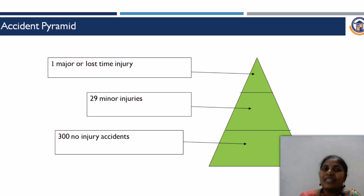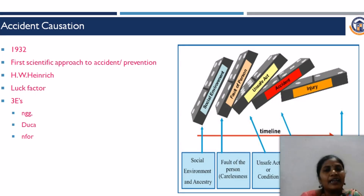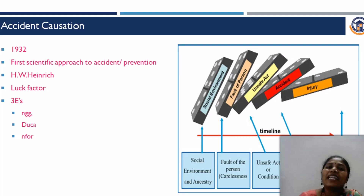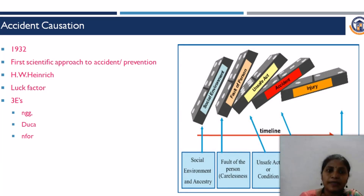Based on this accident pyramid research, they came up with accident causation theory proposed by H.W. Heinrich, generally called the Domino Theory. When you remove any one component, the entire chain will fall. The components are: social environment and ancestry, fault of the person, unsafe act, accident, and finally the injury. If you remove any one component — either the fault of a person, an unsafe act, or the social environment — the accident will not happen, thereby there will not be any injury. This is the first scientific approach towards accident prevention, proposed by H.W. Heinrich in the year 1932.